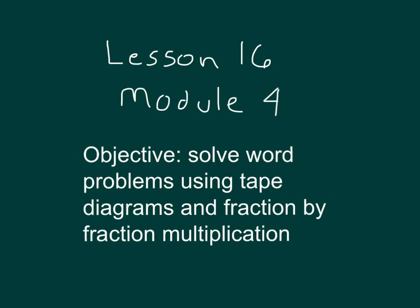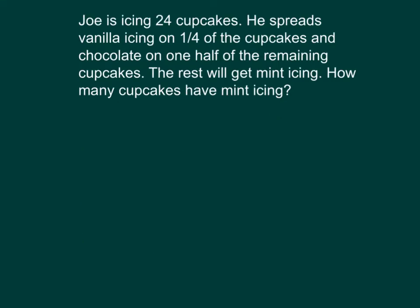Lesson 16, Module 4, Objective: Solve Word Problems Using Tape Diagrams and Fraction-by-Fraction Multiplication. Joe is icing 24 cupcakes. He spreads vanilla icing on one quarter of the cupcakes and chocolate on one half of the remaining cupcakes. The rest will get mint icing. How many cupcakes have mint icing? We'll write a focused answer of blank cupcakes have mint icing.